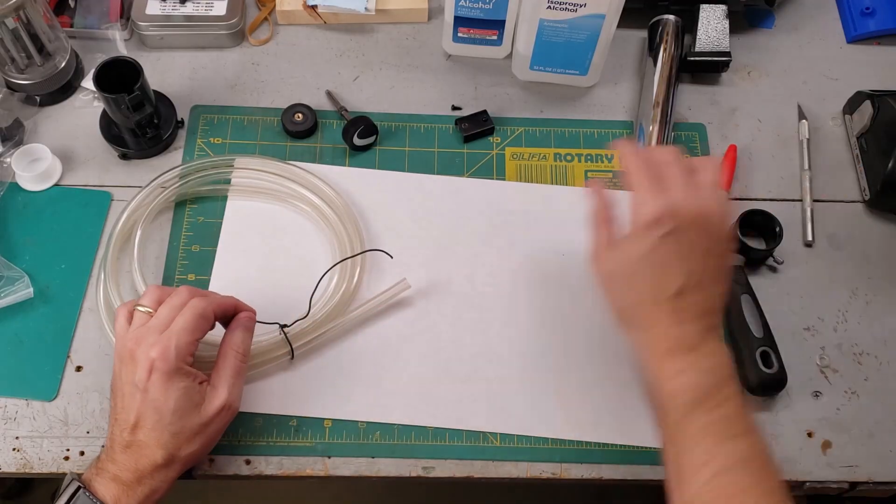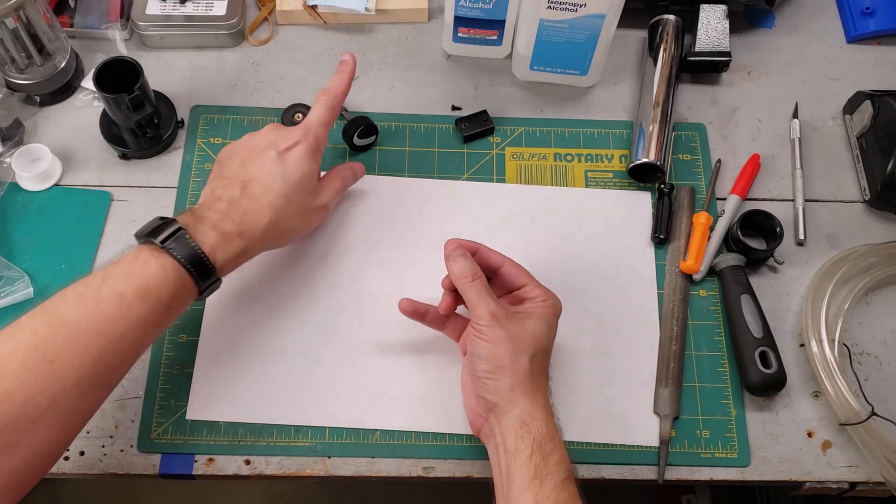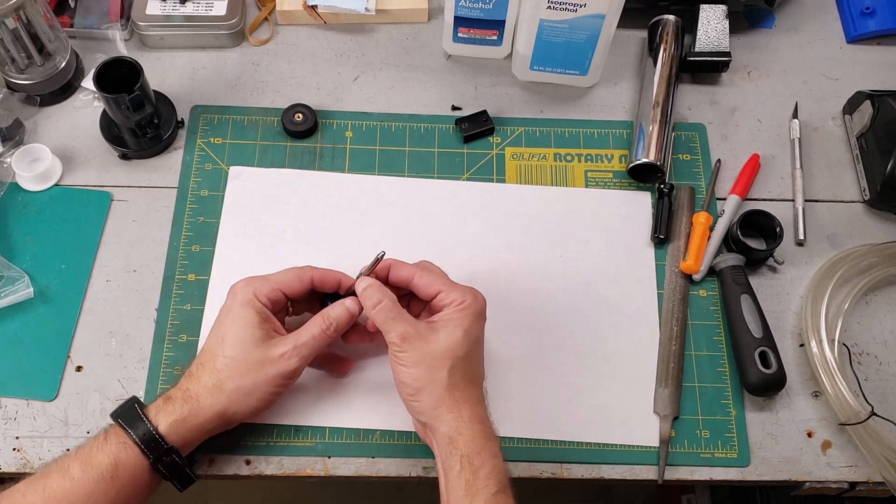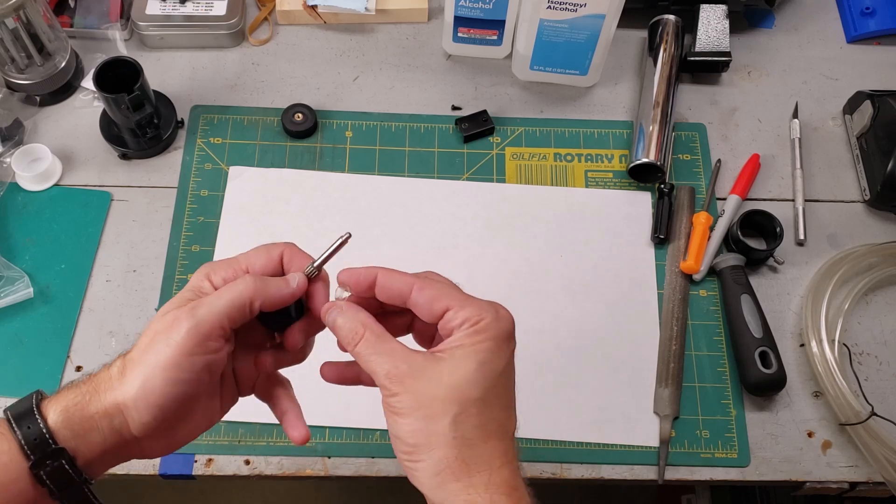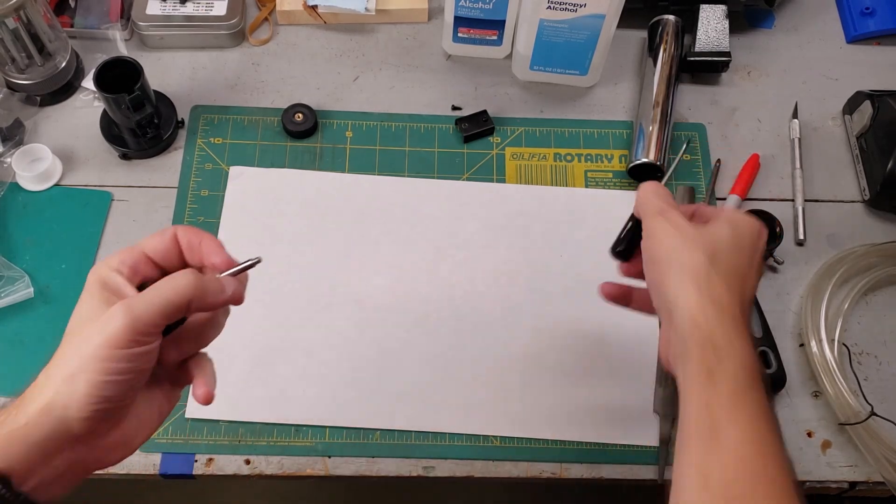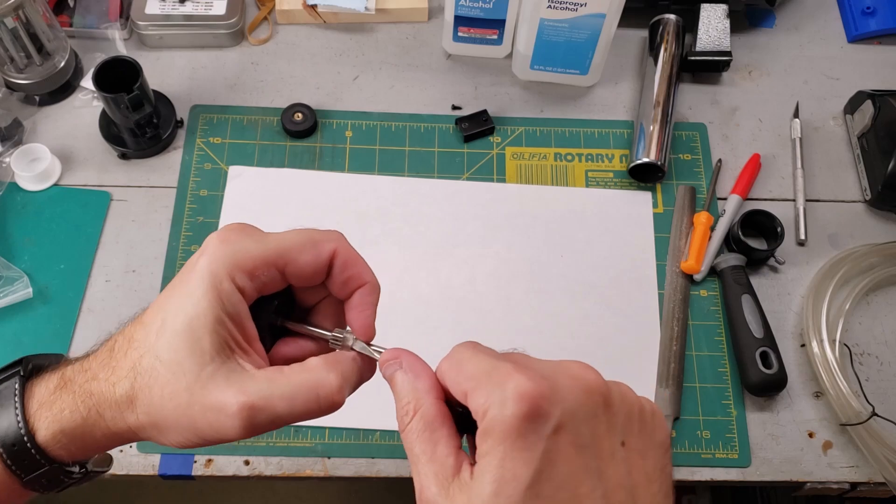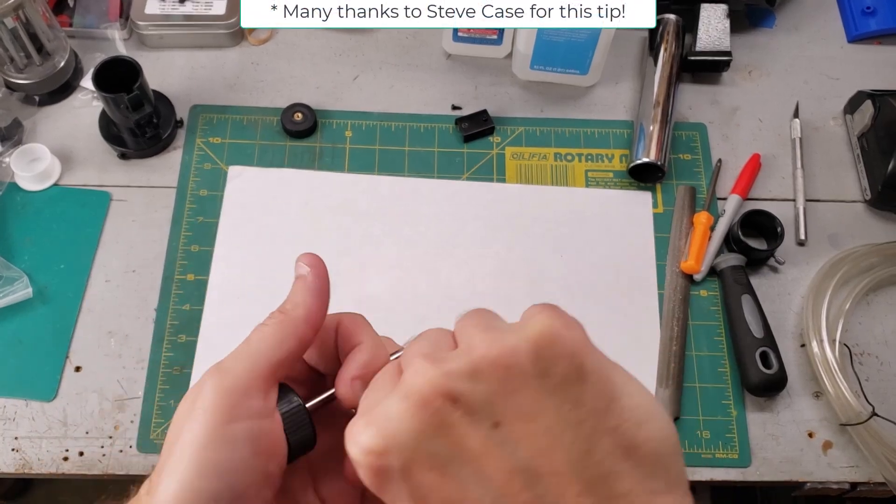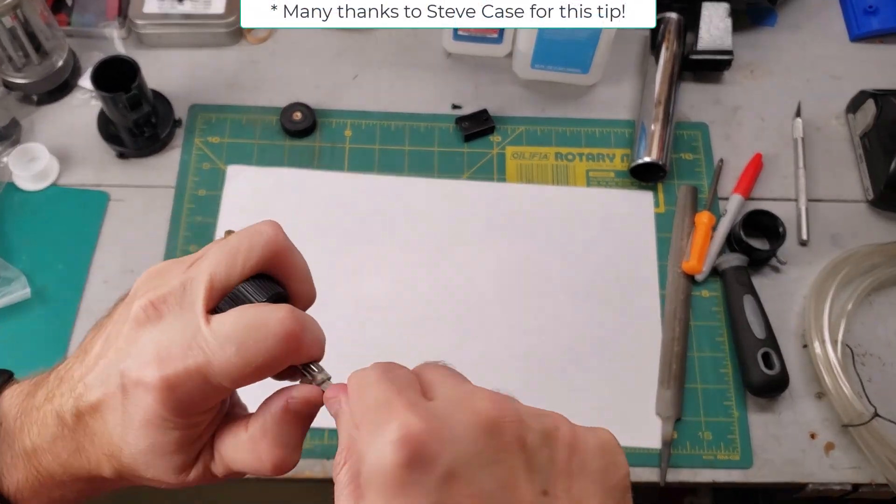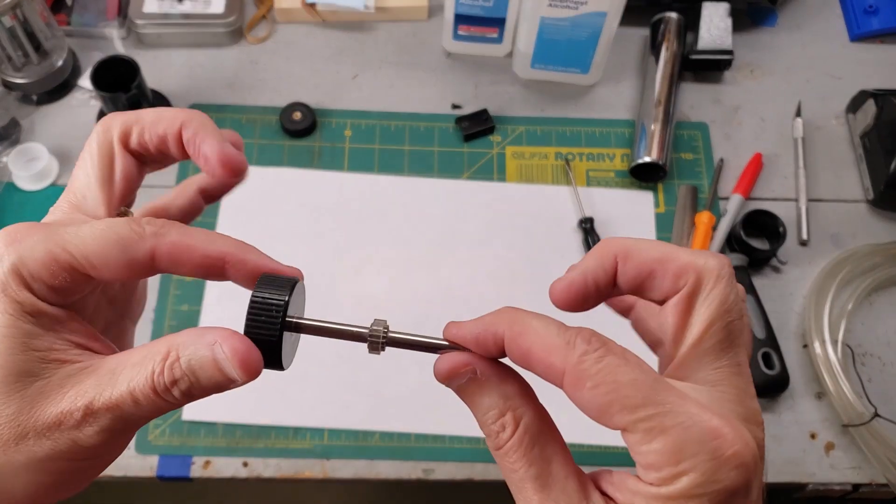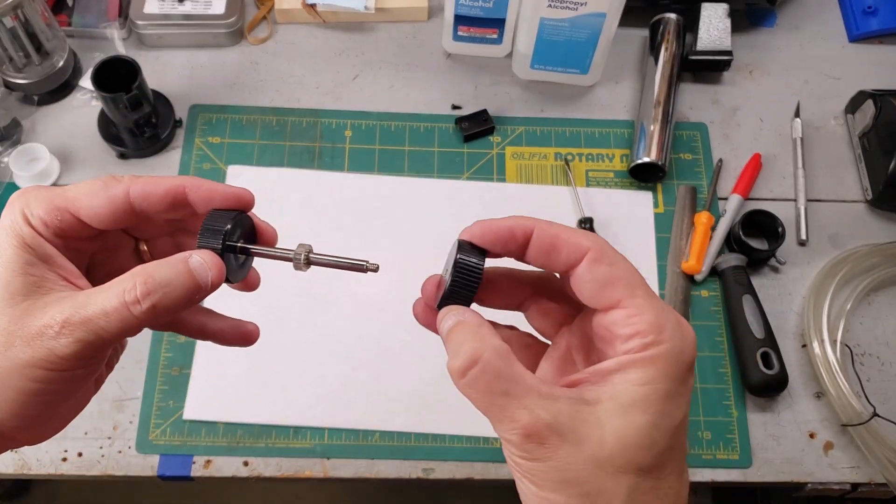Now we need to squeeze this over the pinion, and I have to admit sometimes this is a pretty tight fit. You might need a little screwdriver to get it over there. Top tip: if you put this tubing in warm water first, it makes it easier to put it onto the pinion gear. There we go. Put the knob back on.